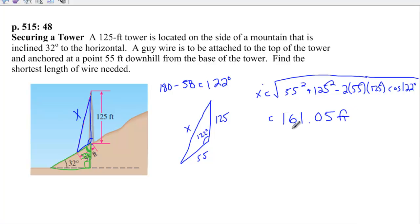If I have a guy wire that's 161.05 feet, that will make it from the top of the tower all the way down to this point 55 feet away from the base of the tower. I hope that helped in terms of solving law of sines and law of cosines. Just make sure that as you go through these, you write down what you know, try and find the angles knowing that 180 degrees is in the three angles of a triangle, and use your law of sines and law of cosines. Good luck.